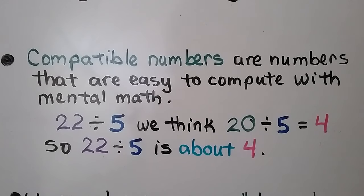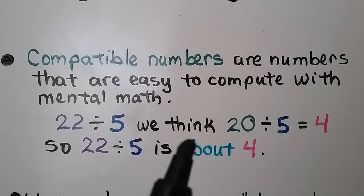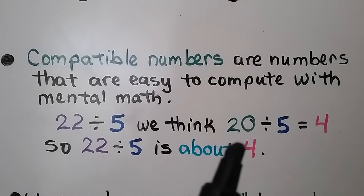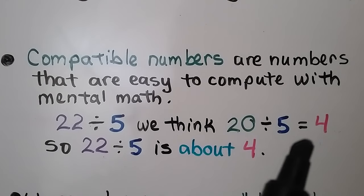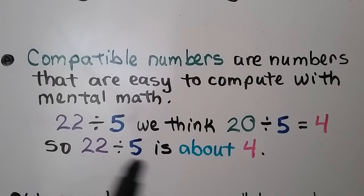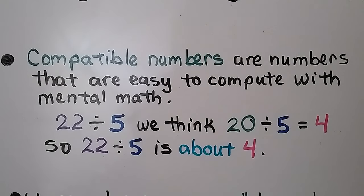We have 22 divided by 5. We think: we need compatible numbers. 20 divided by 5 is equal to 4, so 22 divided by 5 is about 4. We're estimating, so it's not exact.